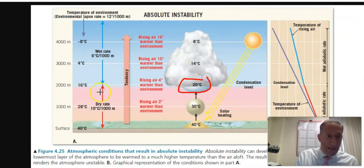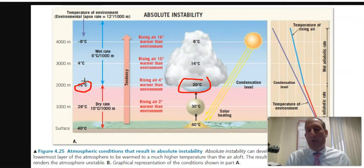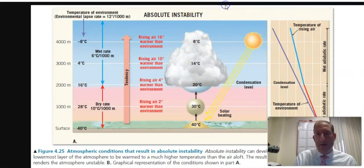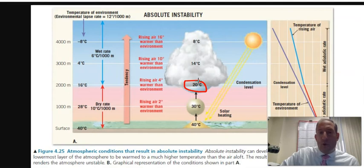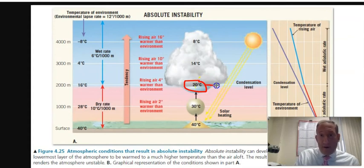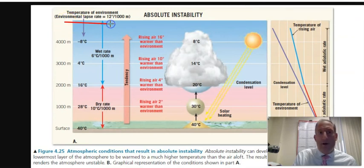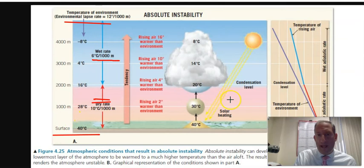On a test, I may ask about one layer — for example, is the environment stable or unstable at 2,000 meters or 4,000 meters? In this case, the answer is unstable. I may also ask you to convert temperatures to Fahrenheit — for instance, what is the air parcel temperature at 2,000 meters in Fahrenheit? You'll be given the environmental lapse rate, wet and dry lapse rates, surface temperature, and condensation level.